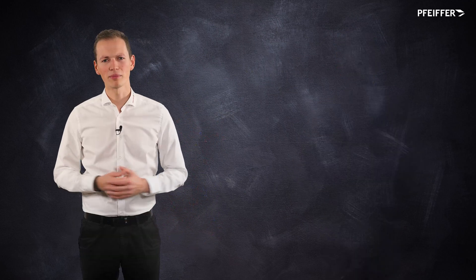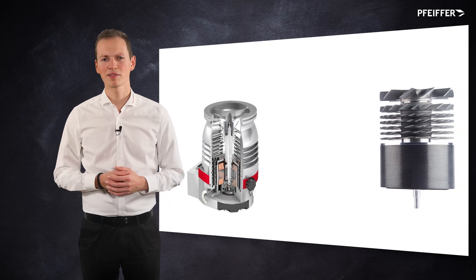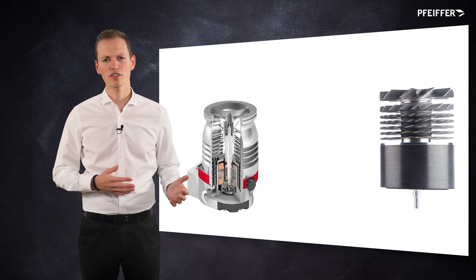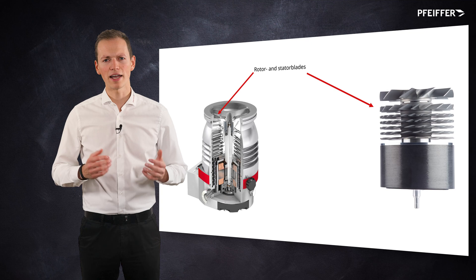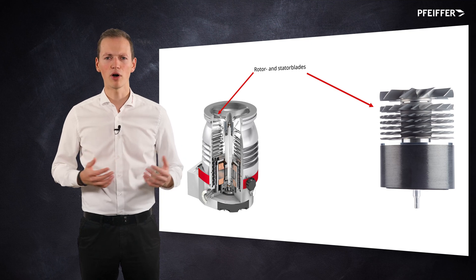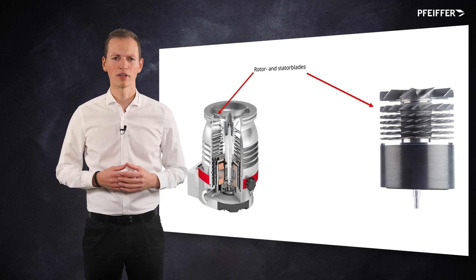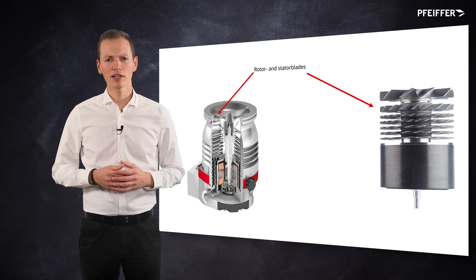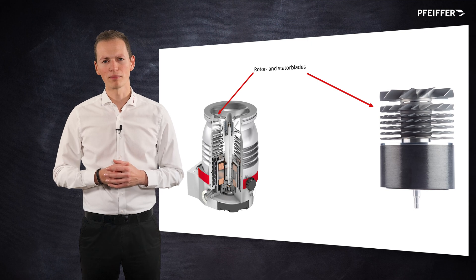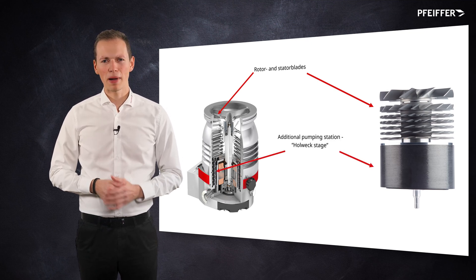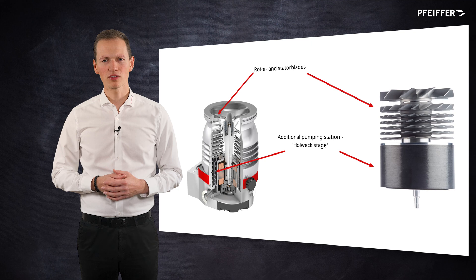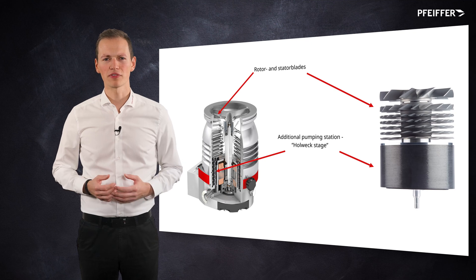In modern turbo pumps, there are several pumping principles combined. The so-called turbo pumping stages consisting of rotor and stator blades are common to all turbo pumps. They can be seen by looking into the high vacuum flange of the pump. To increase the compression ratio, additional pumping stages are often used downstream of the turbo stages.